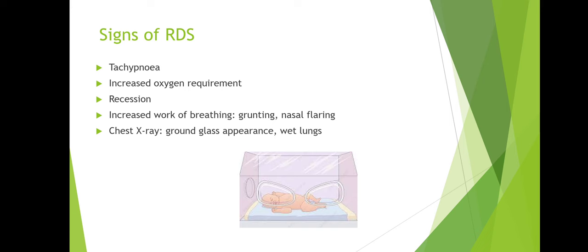When we talk about RDS, what are we looking out for in these babies? You've got a preterm baby brought to the neonatal unit — maybe around 30 weeks gestation — who you know is at risk of RDS. They start presenting with tachypnea, increased oxygen requirement, and they're working hard and retracting. So you're thinking this does look like an RDS picture — that's your clinical signs of the baby in front of you.